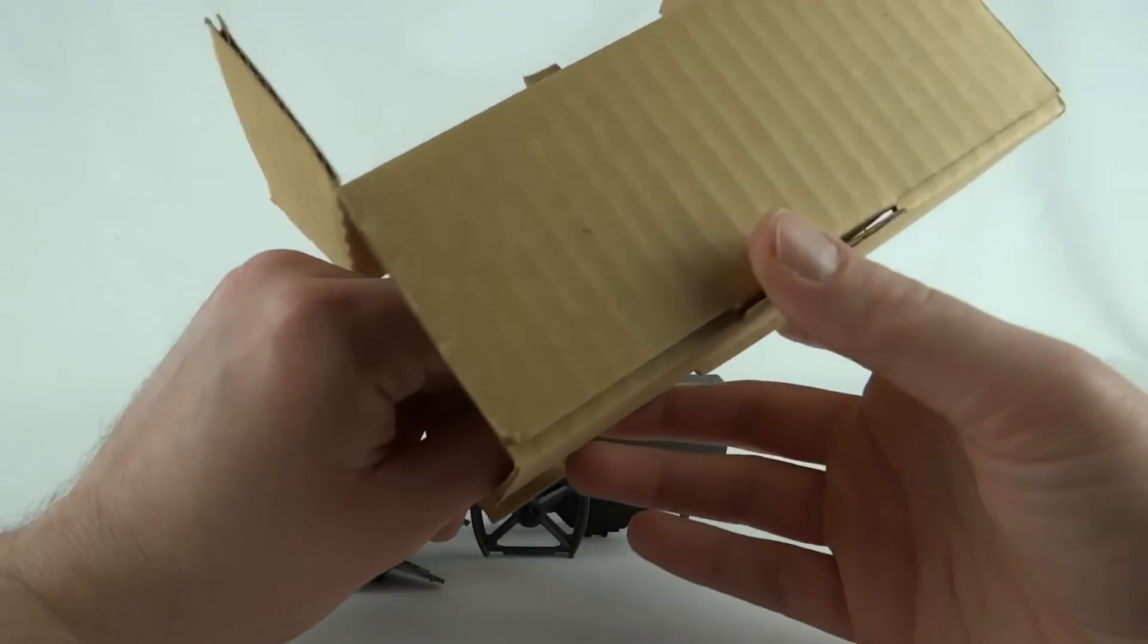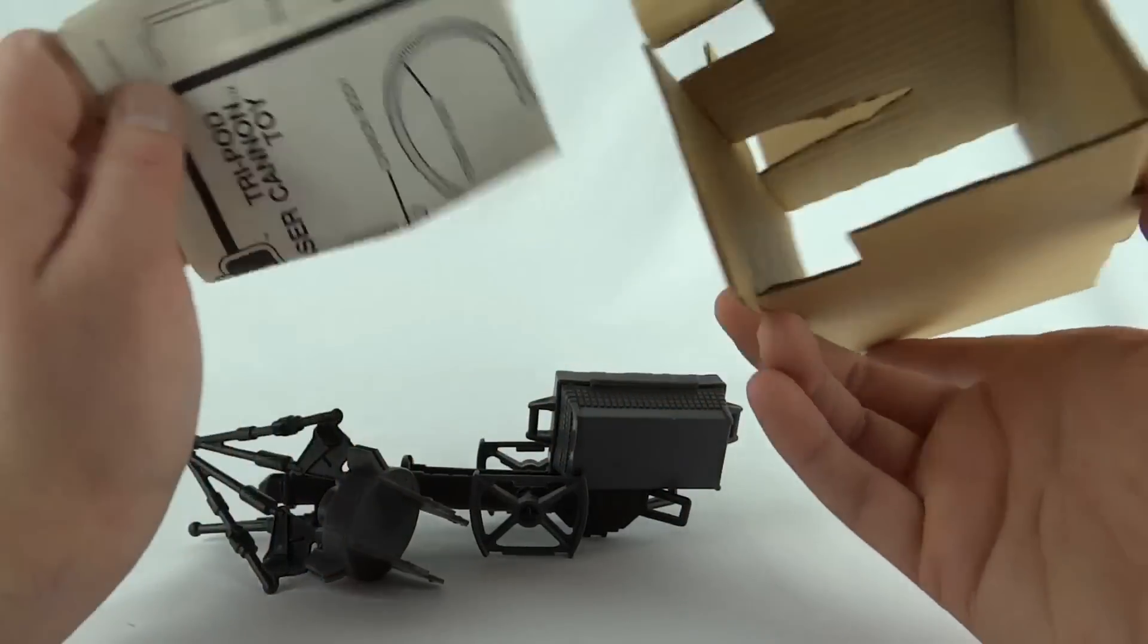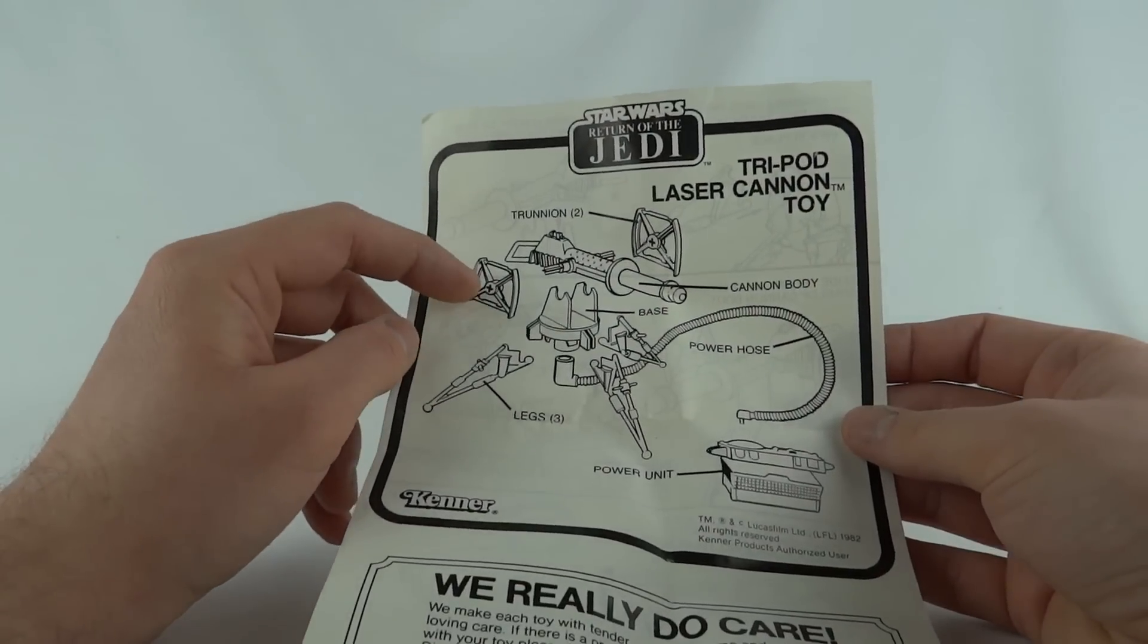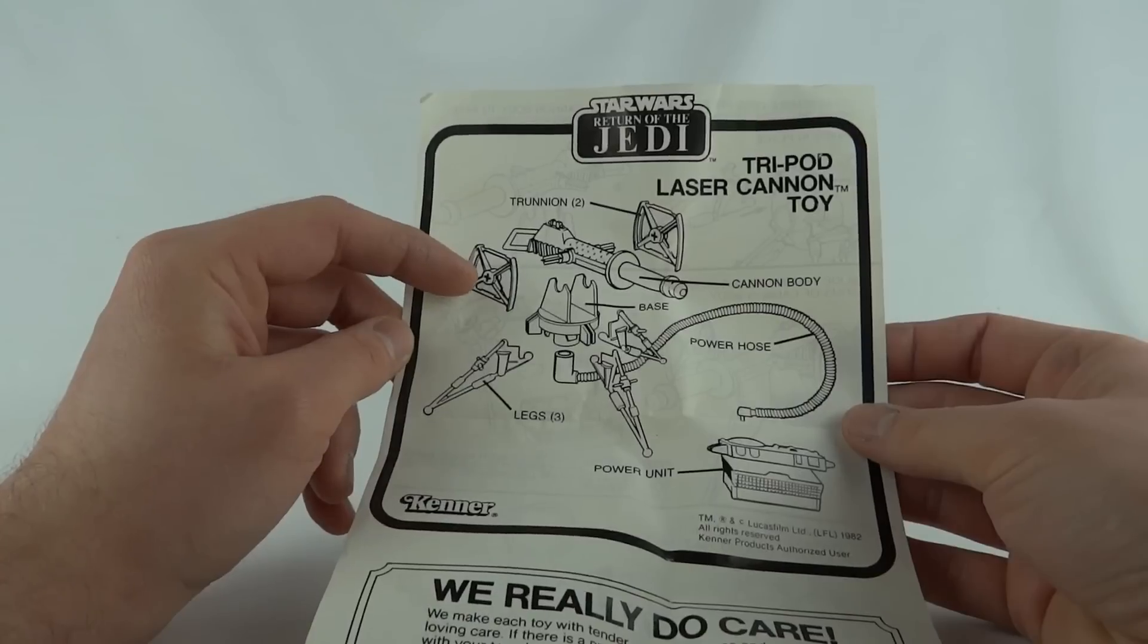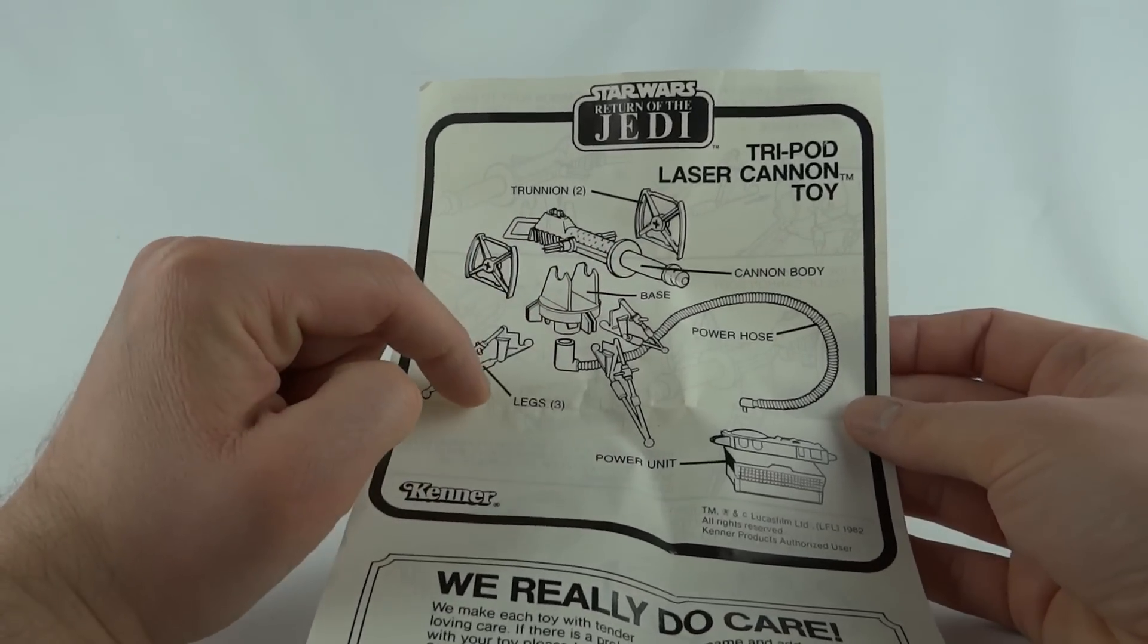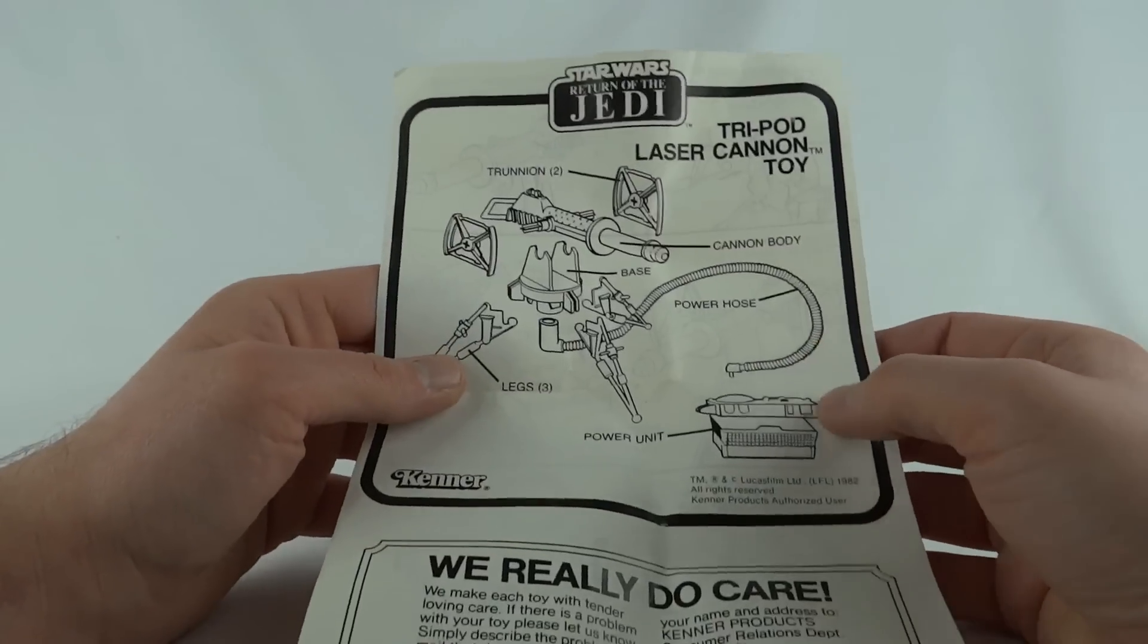These are the instructions. We've got trunnion times two—I've always wondered what they were called, trunnions—cannon body, base, legs three of, power hose, power unit. Lucasfilm 82, we really do care, Cincinnati, Ohio.